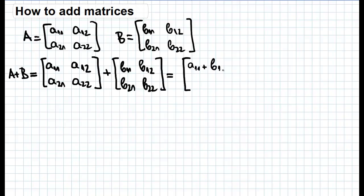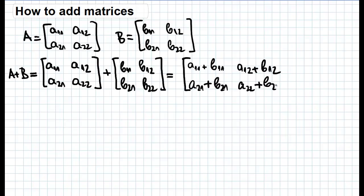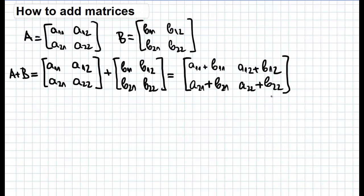For element A11 the corresponding element of matrix B is B11, giving A11 plus B11. For element A12 the corresponding element is B12, for A21 it is B21, and for A22 it is B22. This is all you have to do in order to add two matrices. Now let's try to do this with some numbers.